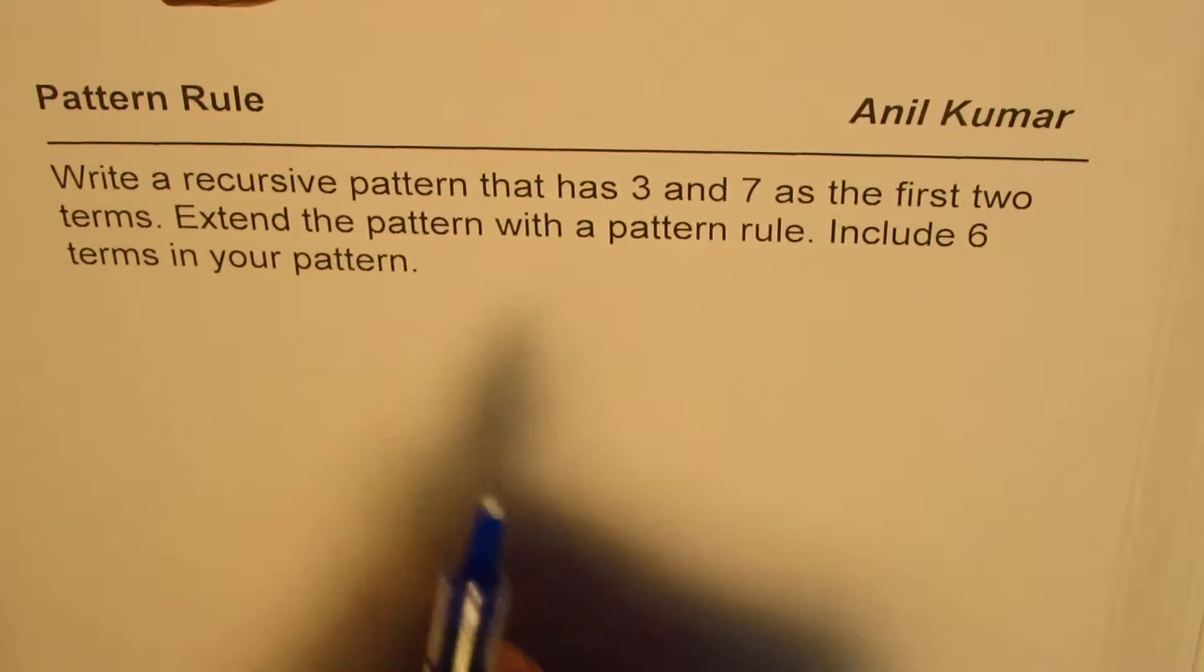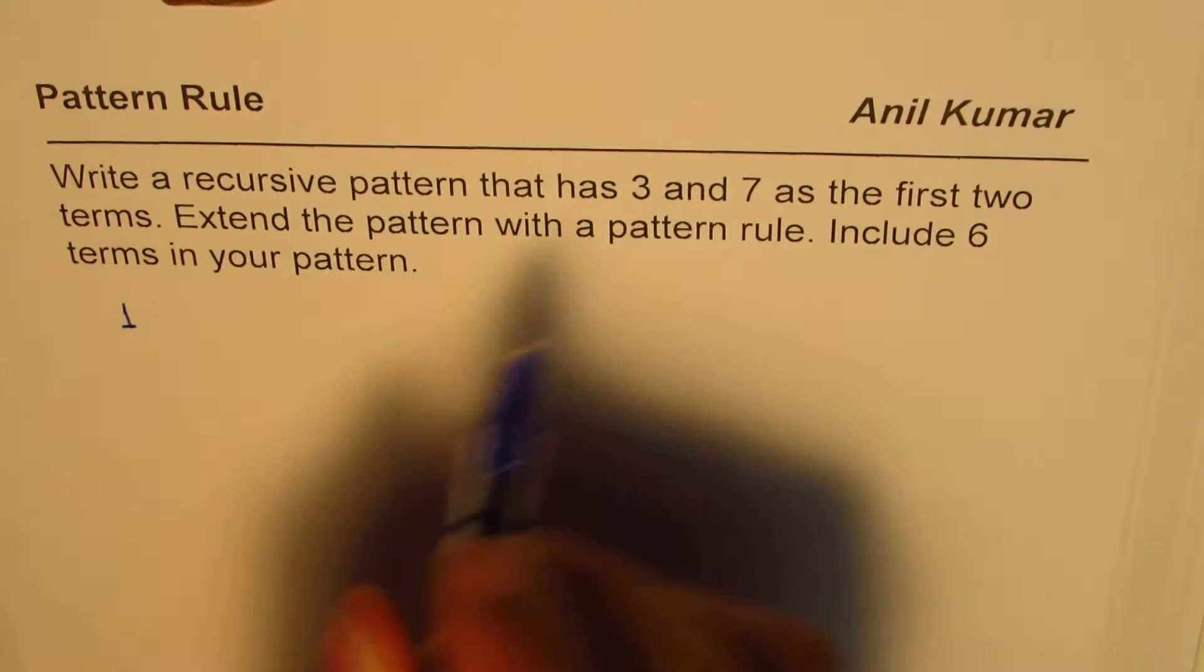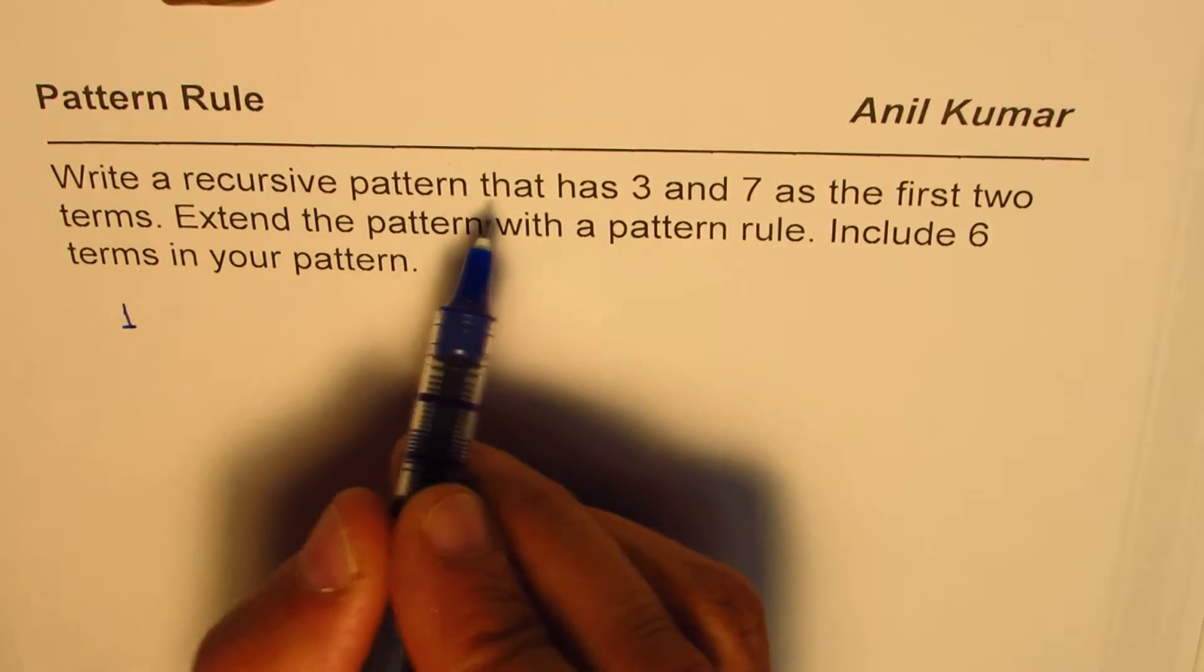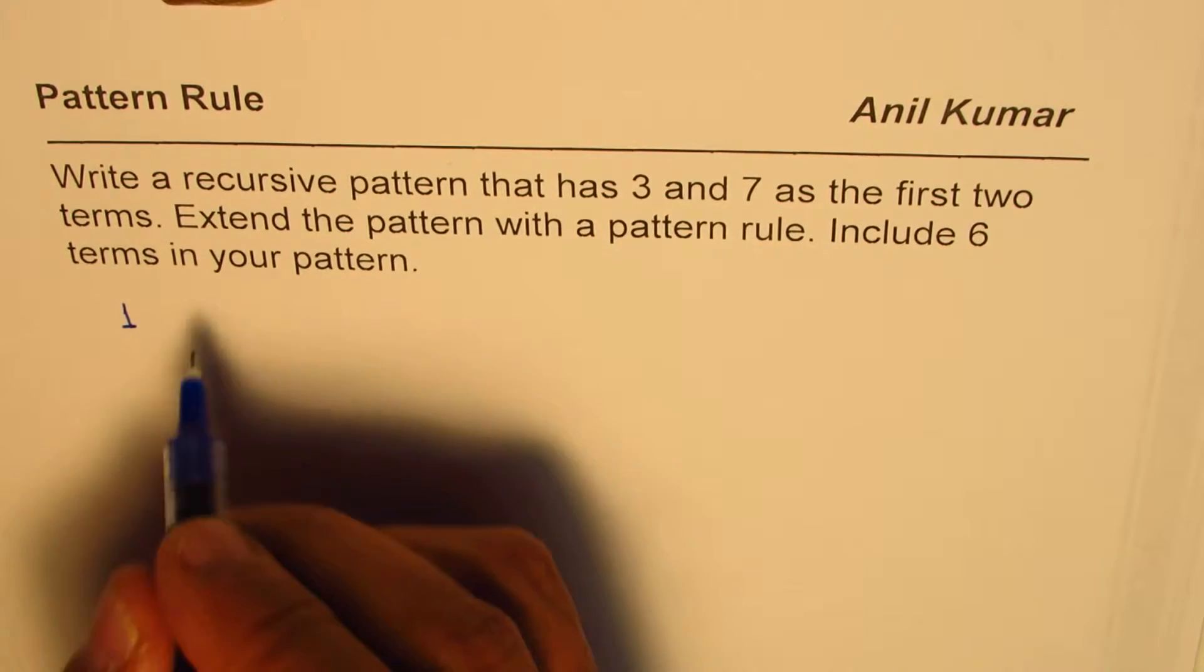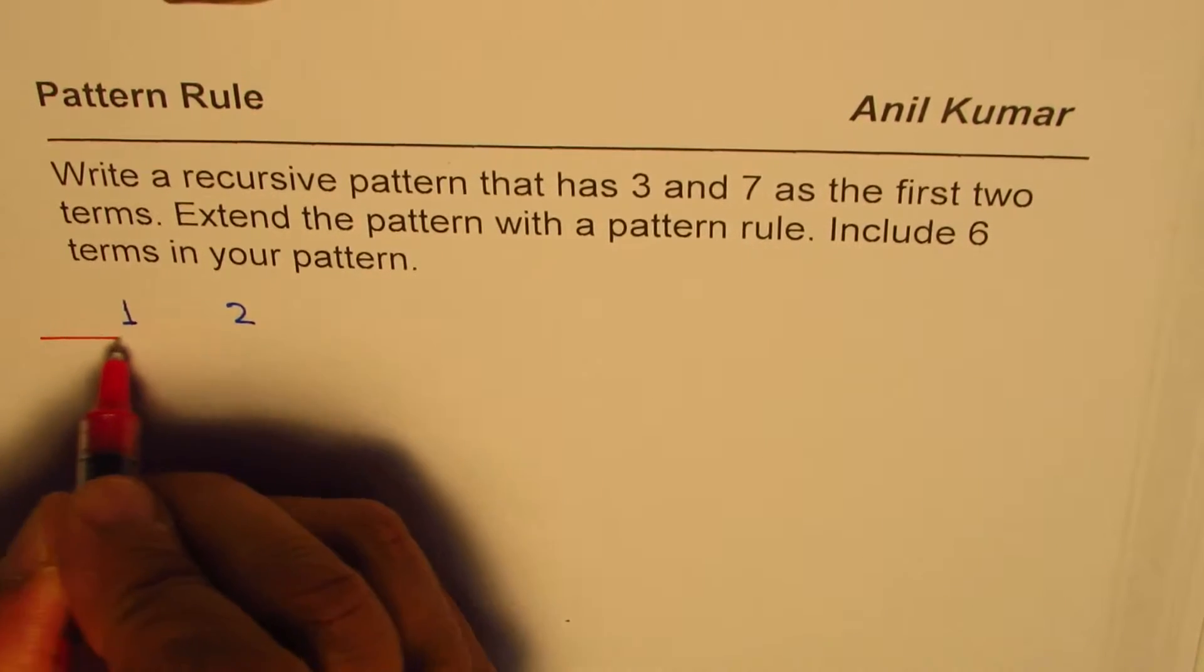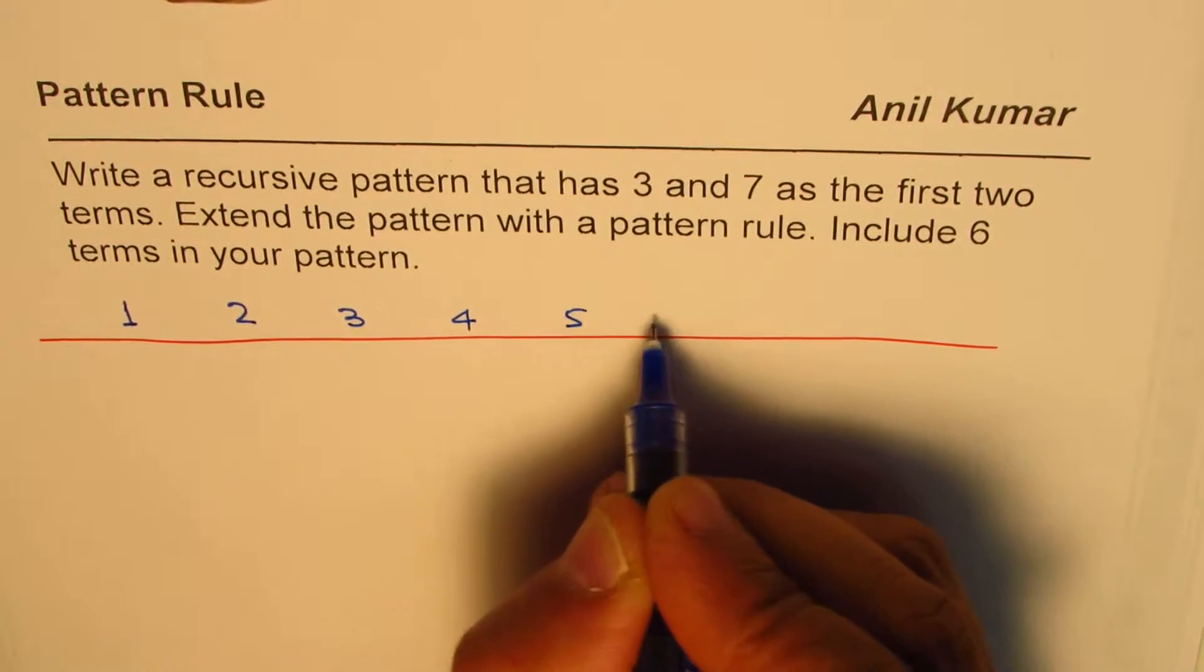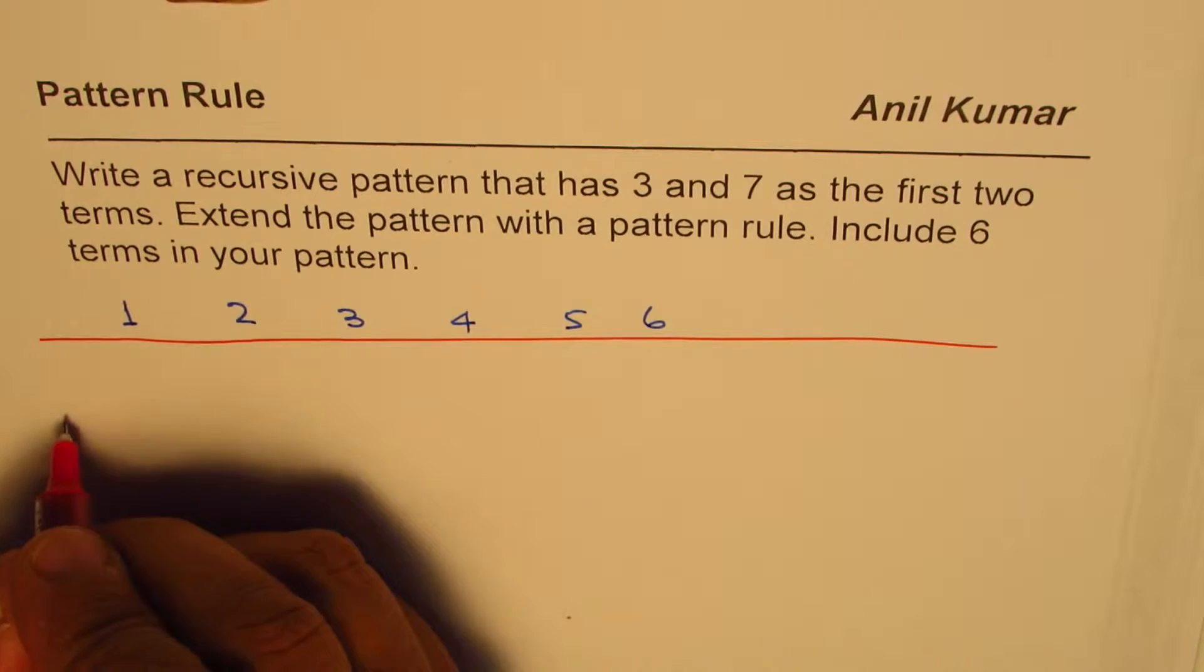Okay, so we have to start with the first term being three and the second term being seven. Write a recursive pattern that has three and seven as first two terms. Let's say this is the first term and the second term. Let me make a table here. We have to write at least six terms.